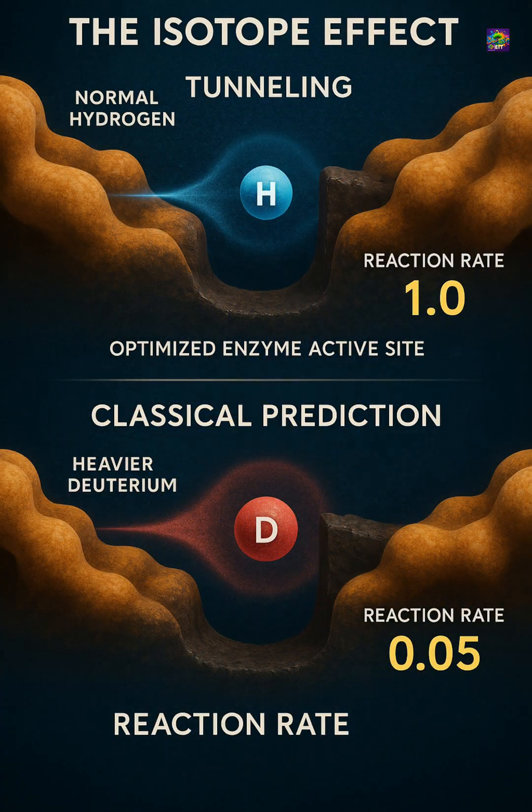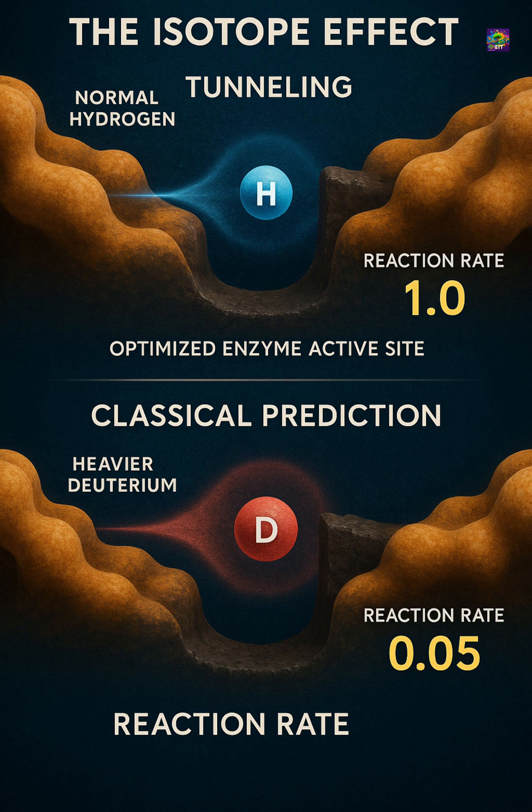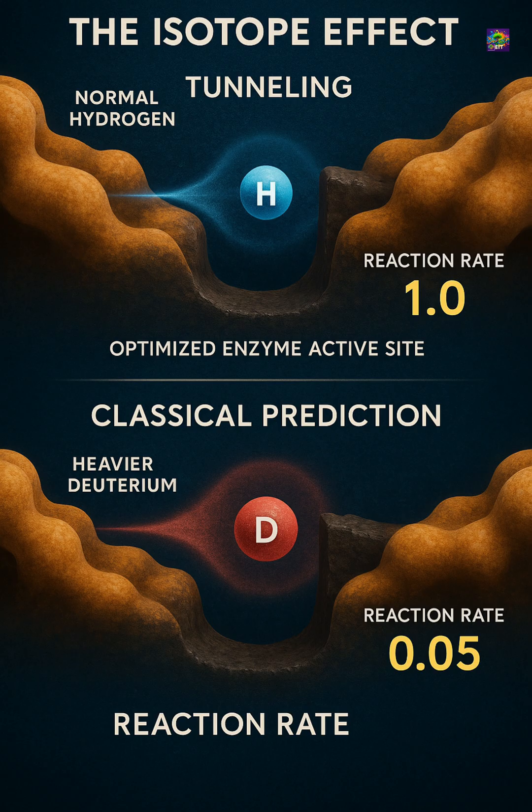Experiments back this up. When hydrogen is replaced with the heavier isotope deuterium, reactions in many enzymes slow down more than classical predictions would allow, showing that tunneling is part of the normal mechanism.